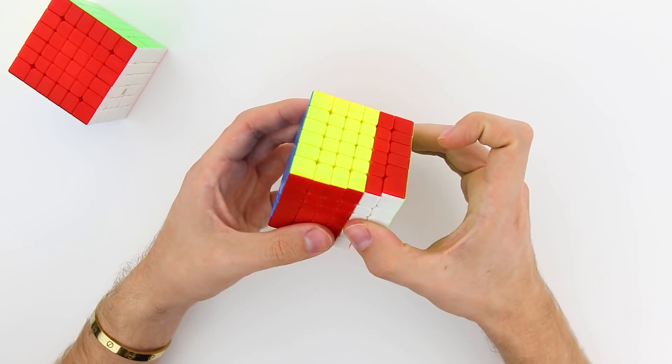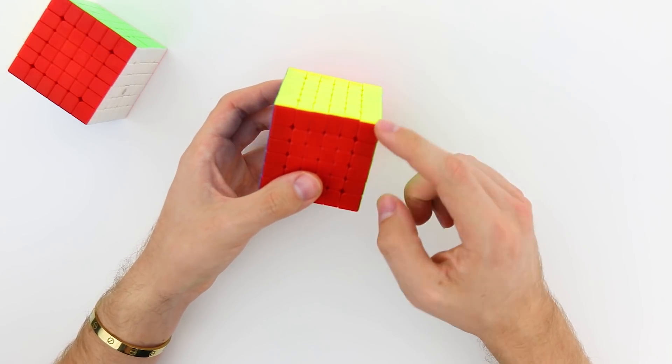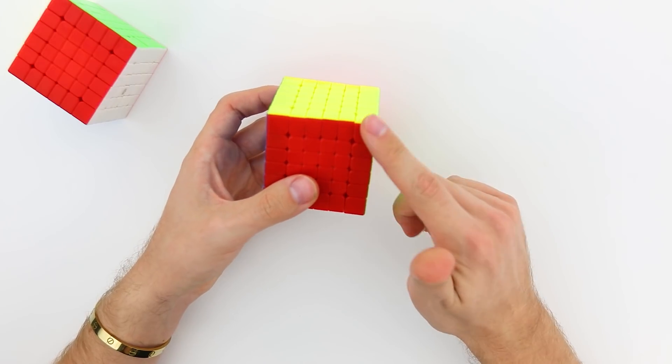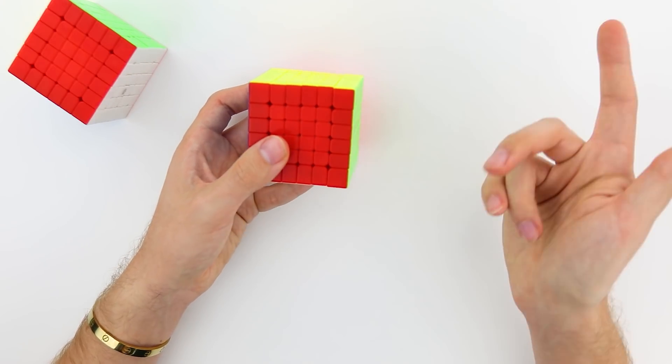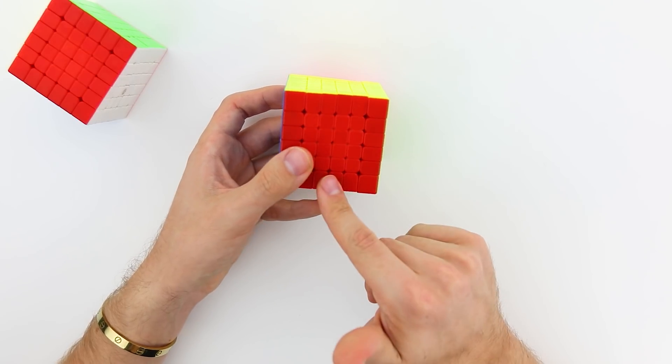The version 2 has slightly stronger inners, very strong second layers, and the outers are definitely stronger than the version 1, but are still weaker than the second layer. So in order of strongest, we have the second layer, outer layer, then innermost layer.